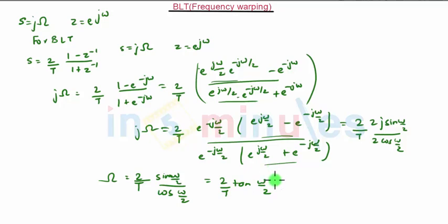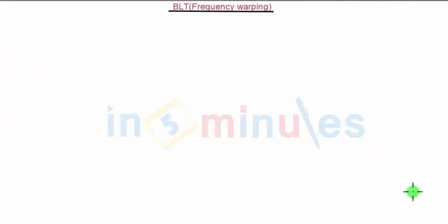Now this is the analog frequency. We can also write the digital frequency by doing some modifications. Taking (2/T) to the left hand side, it becomes (ΩT/2) = tan(ω/2). Taking tan inverse, we finally get ω = 2·tan^(-1)(ΩT/2). This is called the digital frequency.